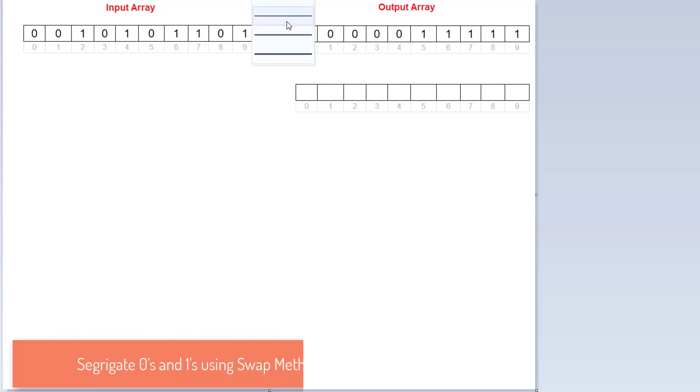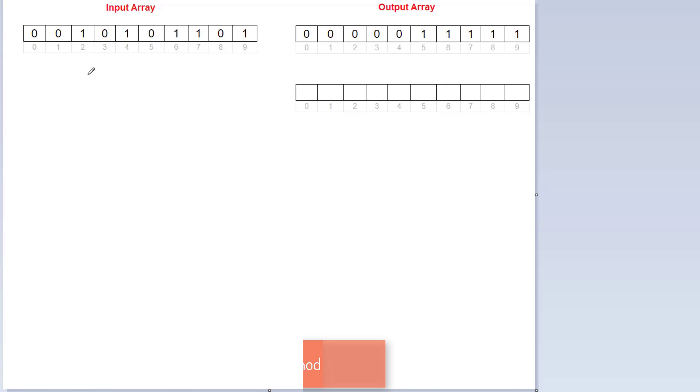Let's write a C program to segregate zeros to the left and ones to the right of the array using the swapping method.